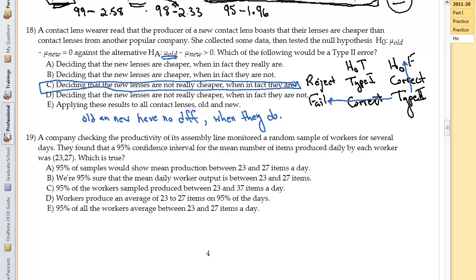A company checking the productivity of its assembly line monitored a random sample of workers for several days. They found a 95% confidence interval for the mean number of items produced daily by each worker was between 23 and 27. Which is true? Well, hopefully we're going to say that we are 95% sure that the mean daily worker output is between. I mean this is our model sentence right here. All of the rest of that stuff is not following the model sentence and so it's not going to be correct. And so 19 is definitely B. All the rest of them are not model sentences. This is the model.